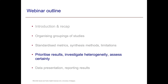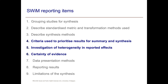Onto the second last section. This is about reporting how we prioritise results, investigate heterogeneity and assess certainty. This section is about items 4, 5 and 6 of the SWIM reporting guidance.